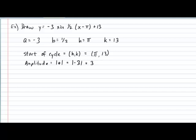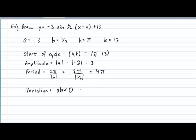Next, let's identify the period. The period is given by 2 pi divided by the absolute value of b. In our example, that equals 2 pi divided by the absolute value of one half, giving us a period of 4 pi — meaning our cycle will be 4 pi radians long. Next, let's identify the variation. Since the product of a and b is negative, our cycle will begin with a dip and end with a hump.